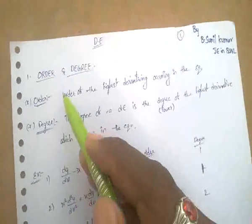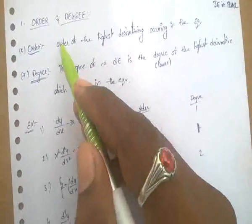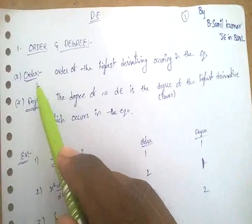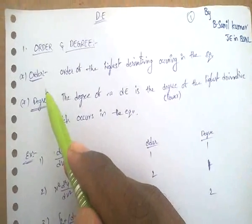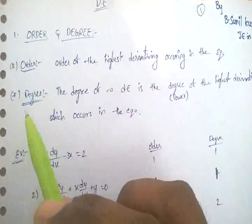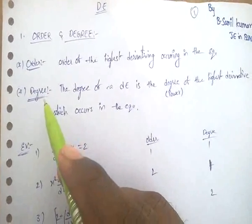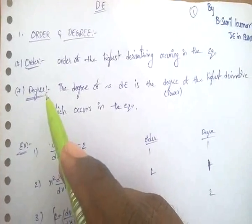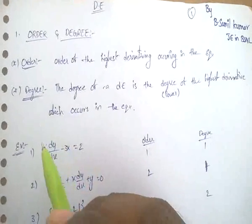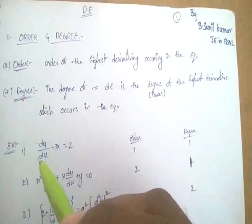Next topic: order and degree — a very, very important topic. What is order? Order is the highest derivative in the equation. What is degree? Degree is the power of the highest derivative.